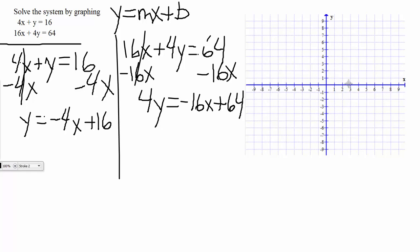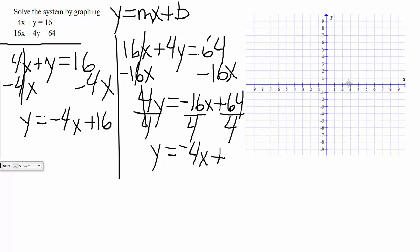Now we need to finish getting this solved for y, so we divide all sides by 4. On the left-hand side, 4 divided by 4 cancels, leaving y. It's equal to — a negative divided by a positive is negative — 16 divided by 4 is 4, dropping down the x. Plus 64 divided by 4 is 16. So let's take a look at these equations now that we have them in proper form: on the left, y equals negative 4x plus 16; on the right, y equals negative 4x plus 16.